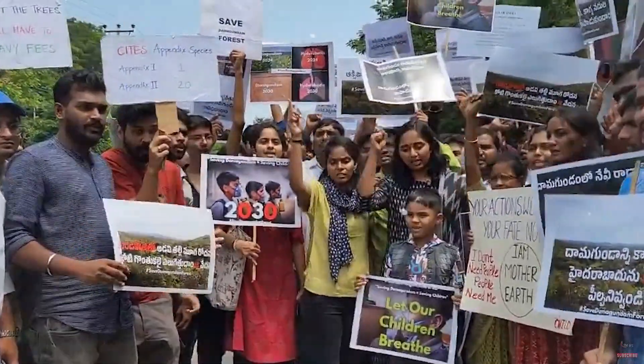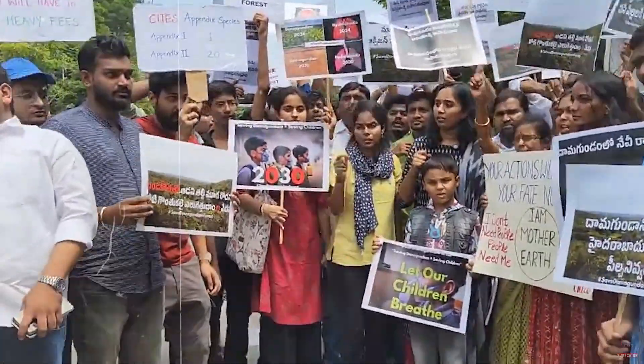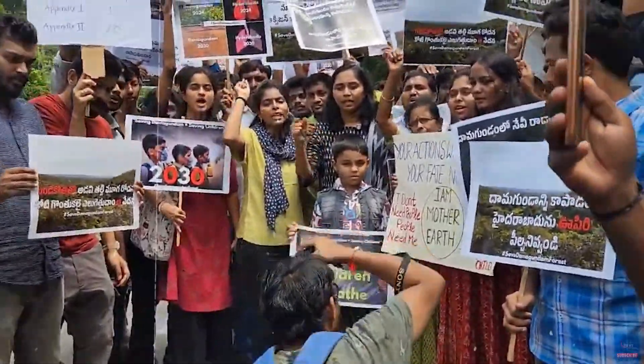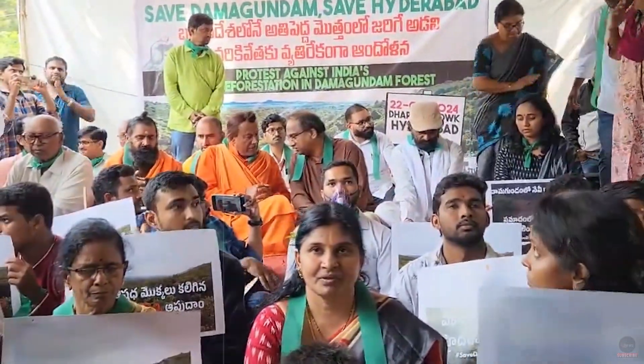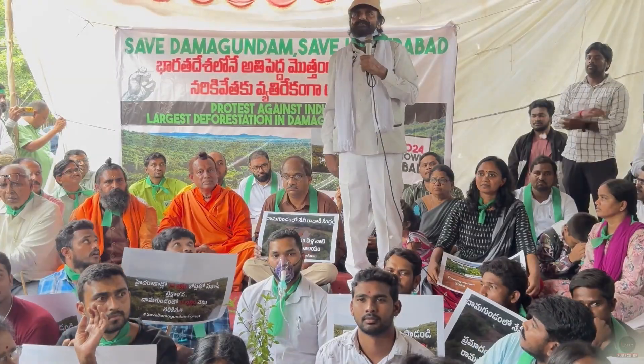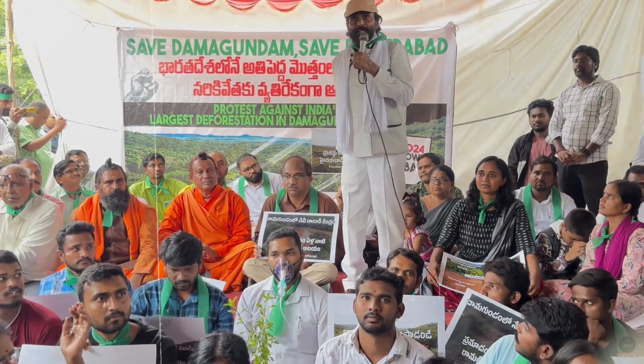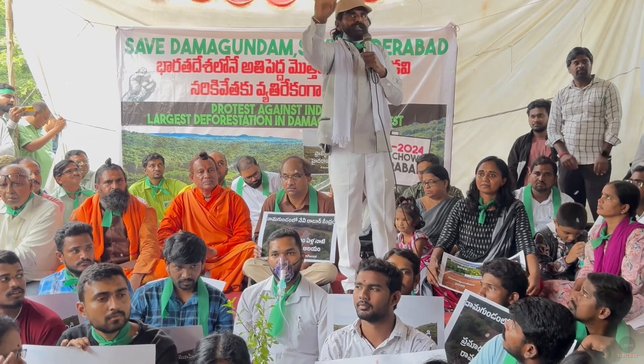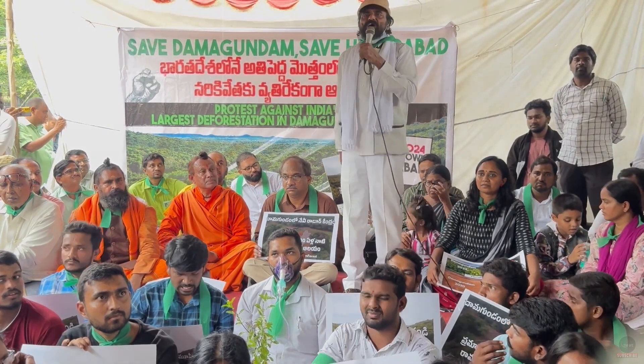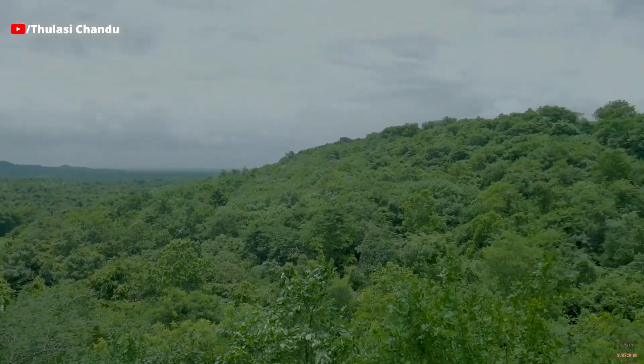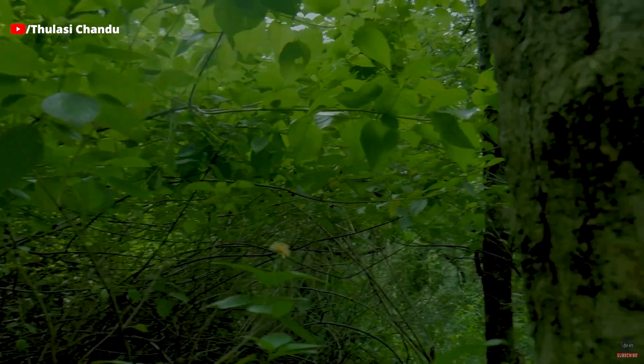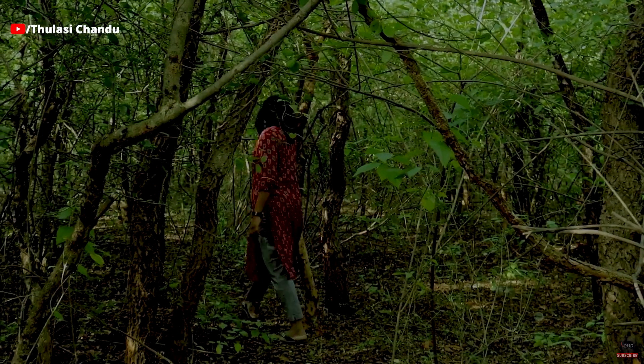On 22 September, a protest named Save Dhamagundam started at Dharnachok Indira Park in Hyderabad. Journalists, environmentalists, politicians, students and civilians assembled here protesting against the naval station. The protesters claim over 12 lakh trees will be felled for the project. With the cutting down of the trees, the CO2 levels will rise and it will also adversely impact the biodiversity of the region. It will also affect the livelihood of tribal people and people engaged in cattle grazing and farming.